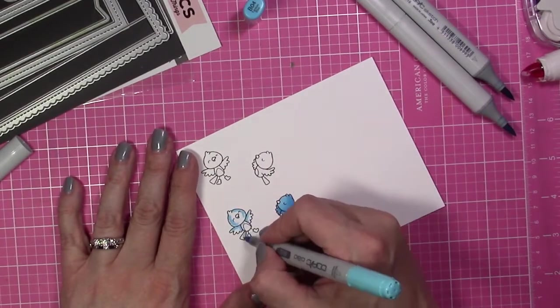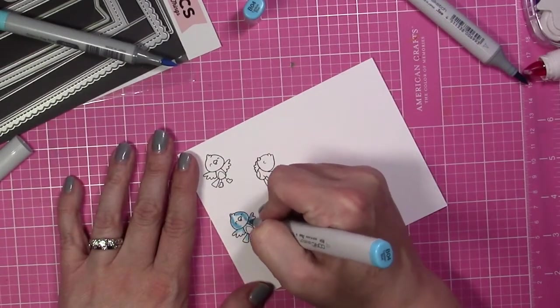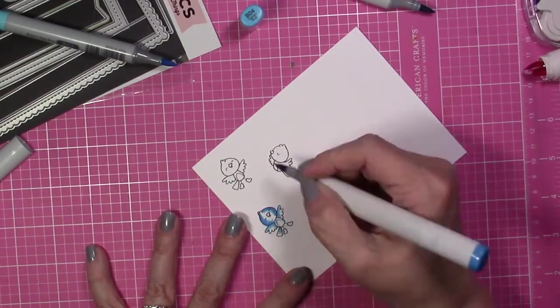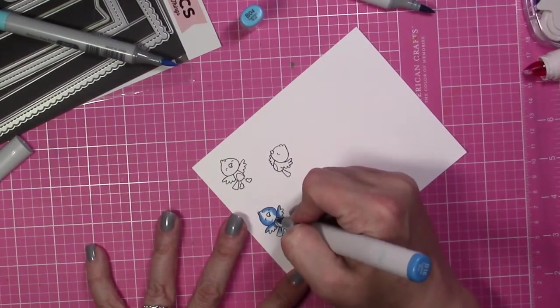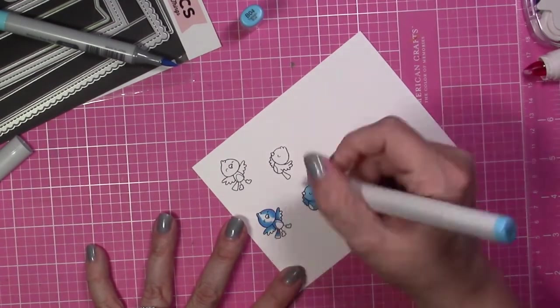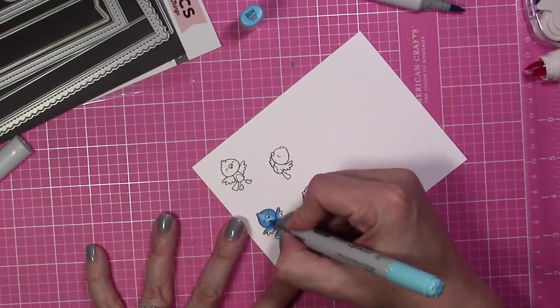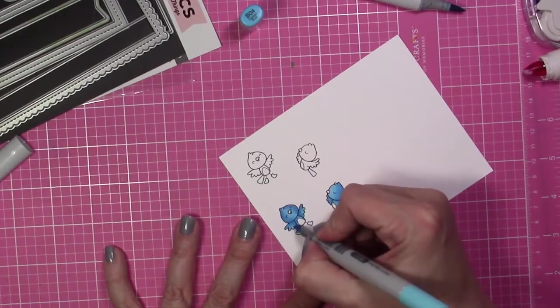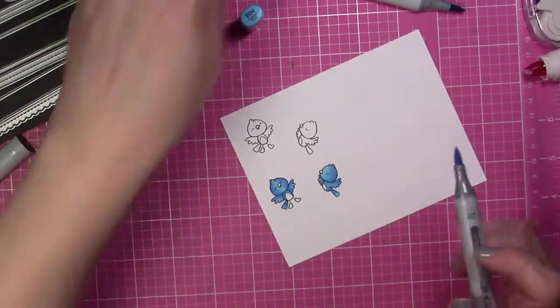So I used BG0000, BG10, and BG11 for the bird's bodies. Then I switched it up and used N0, N1, and N3 for the bellies. And then for the little boots the bird had on, I went ahead and used a mixture of green to coordinate with that pattern paper. So I used YG01, YG03, and YG25.